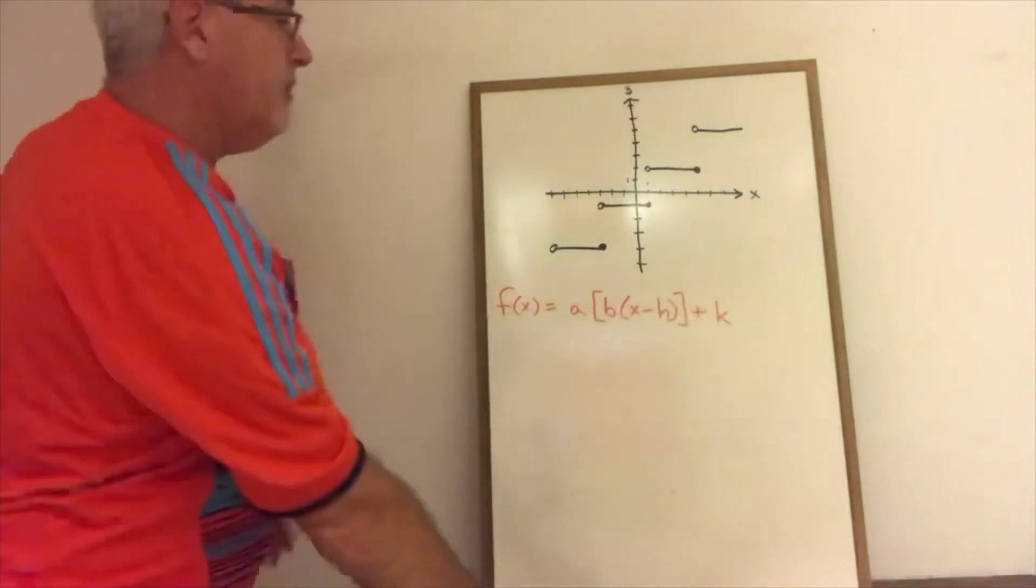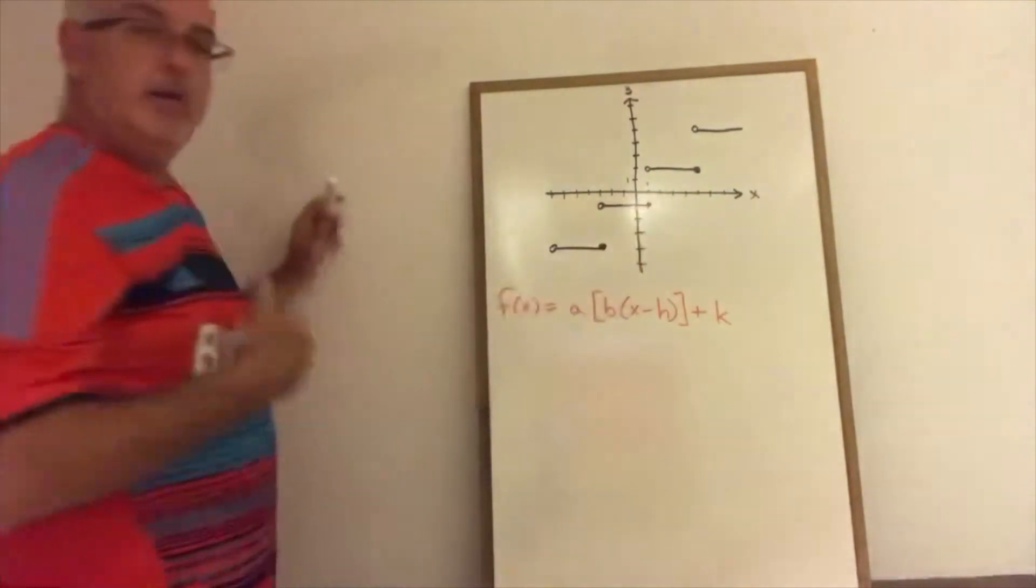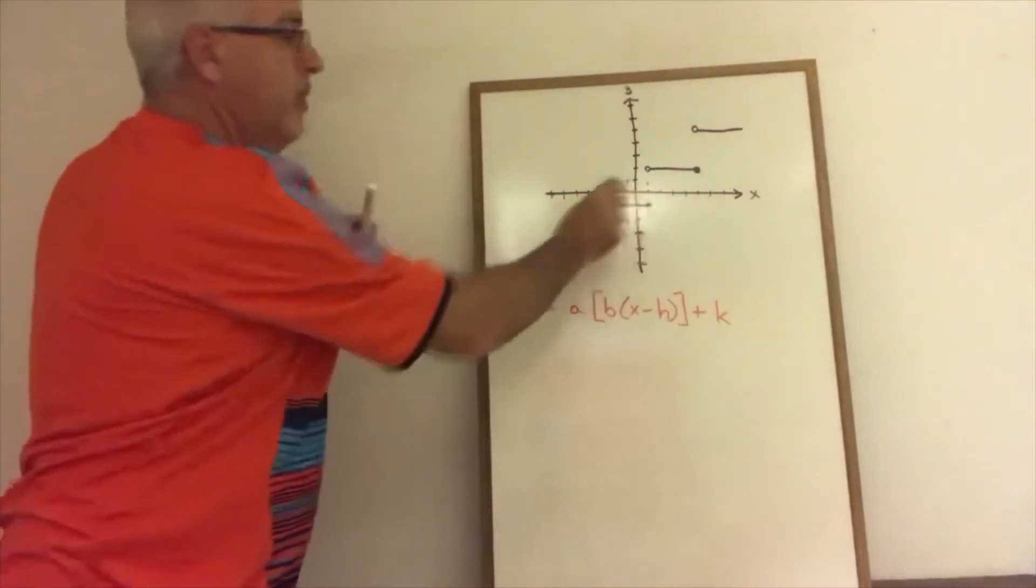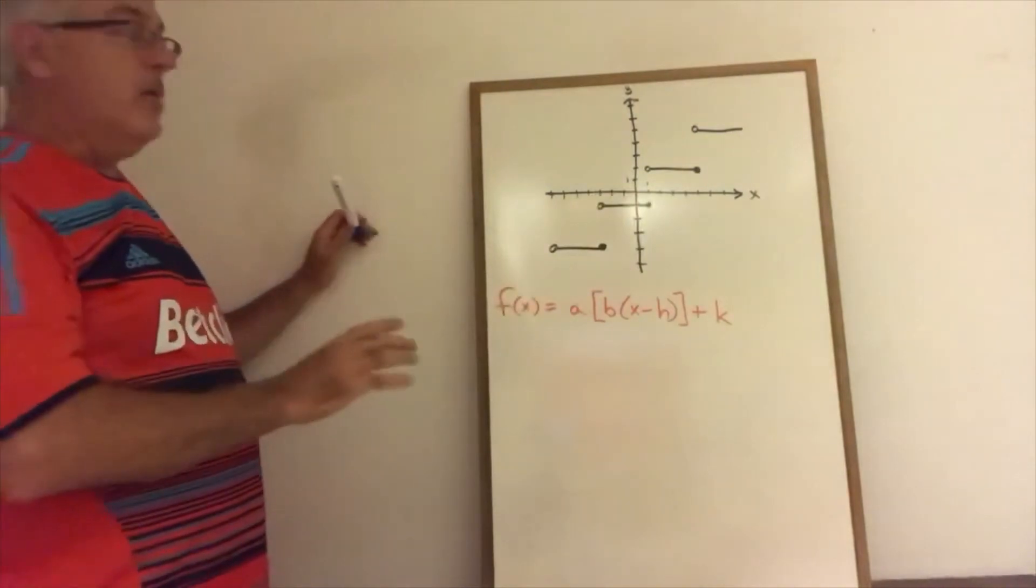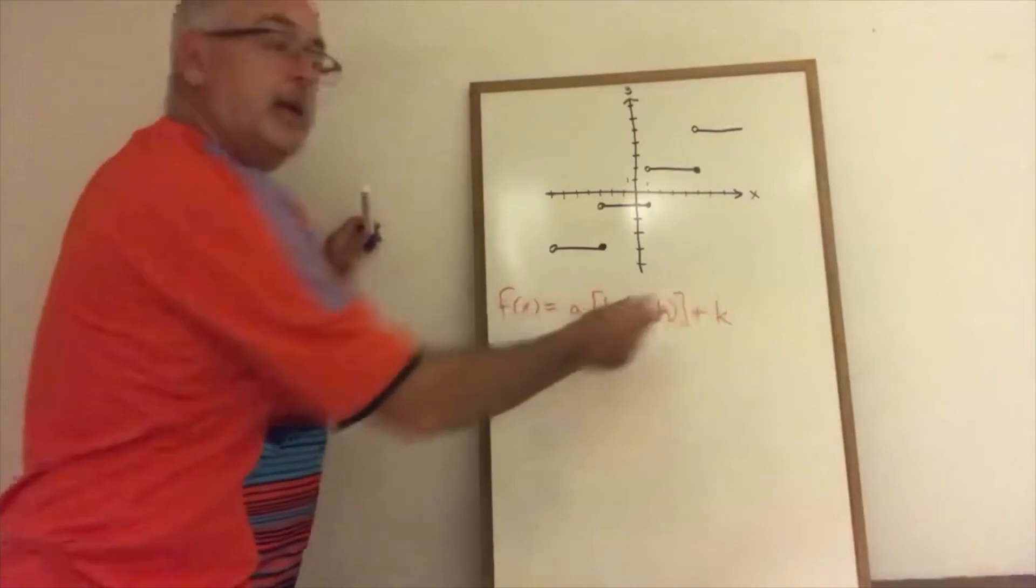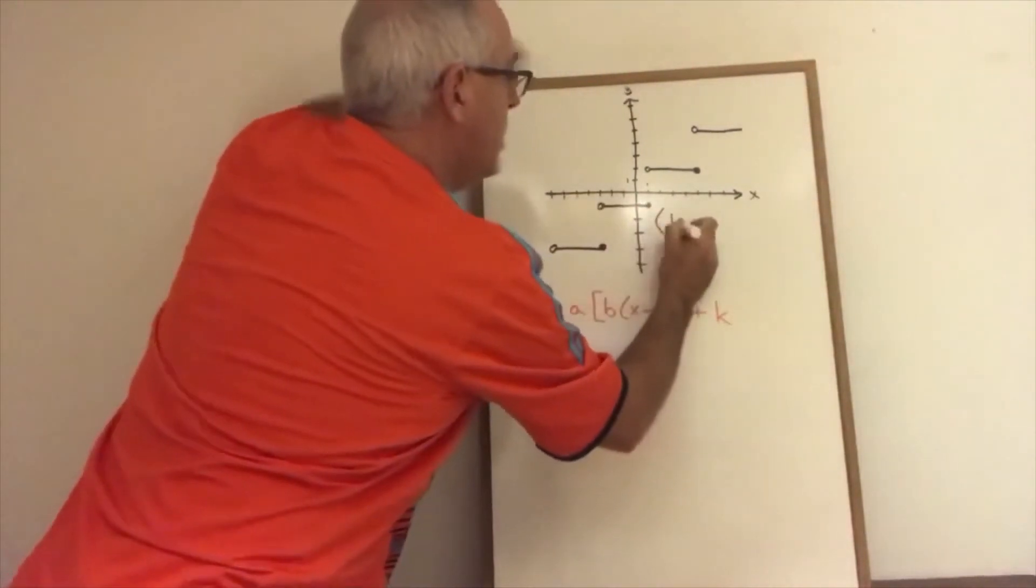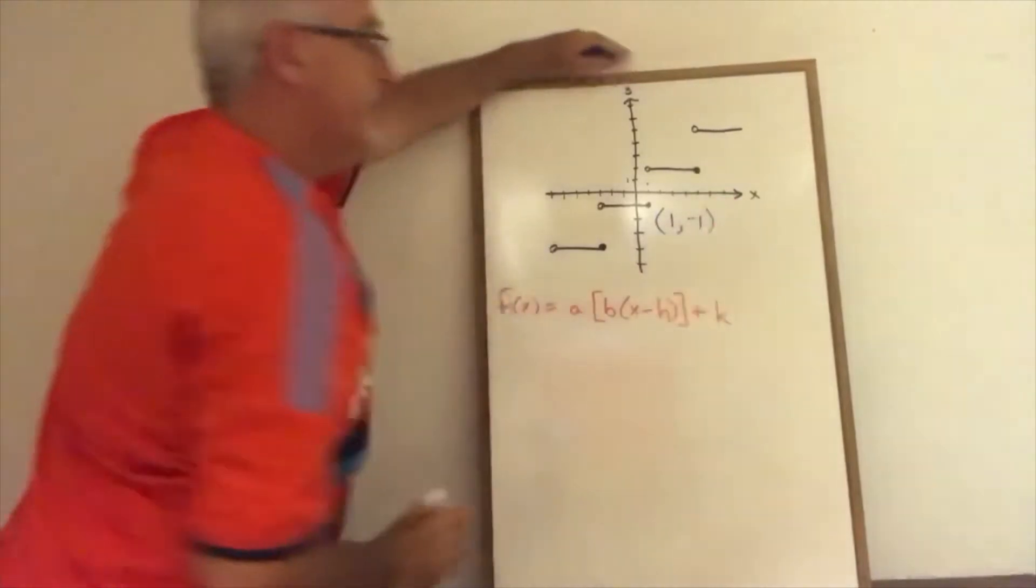The first thing that I'm going to look at is this closed circle right here. I choose the closed circle that is closest to the y-axis, and I know that the coordinates of that point can be my h and k. That point in this case is 1, negative 1.